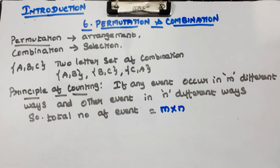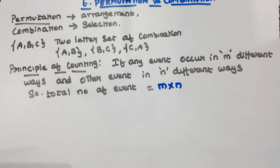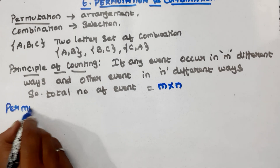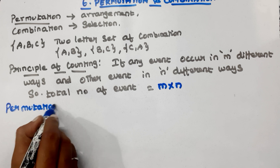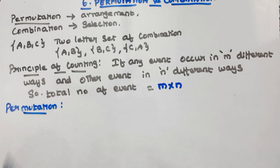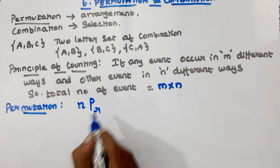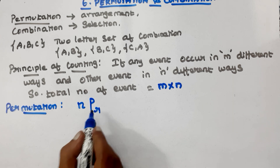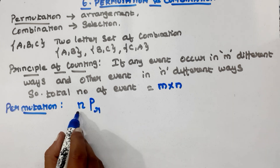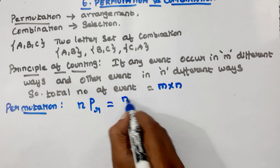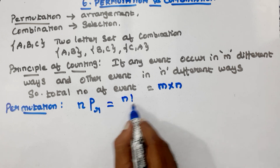Now let's look at permutation and combination formulas. The permutation formula involves n factorial.